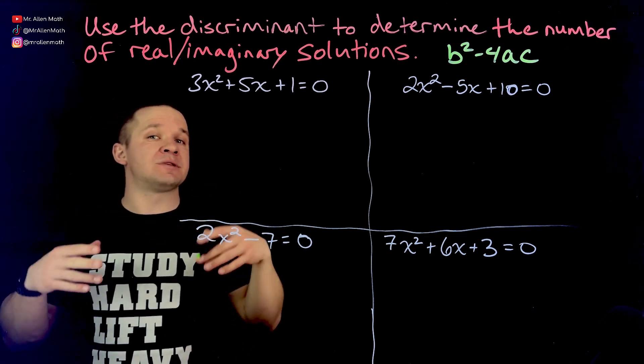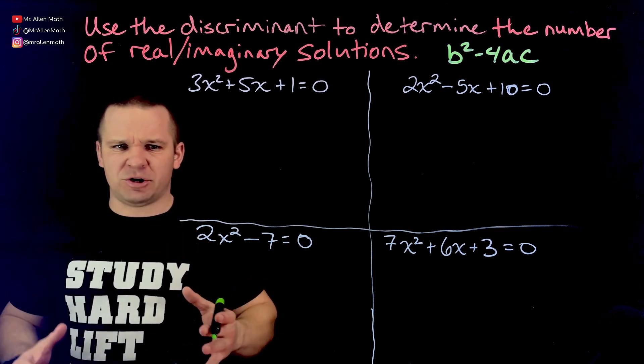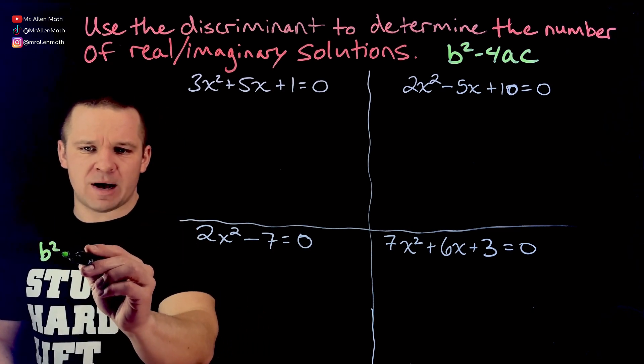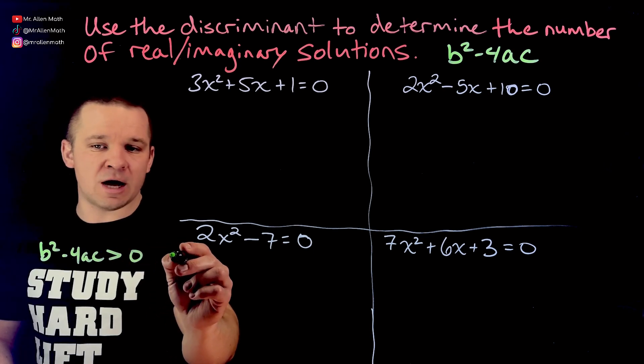So those are the rules when it comes to the discriminant. And perhaps I'll write that down. I know this is going to be kind of like on my shirt here. I apologize. But if B squared minus 4AC is greater than zero, we get two reals.